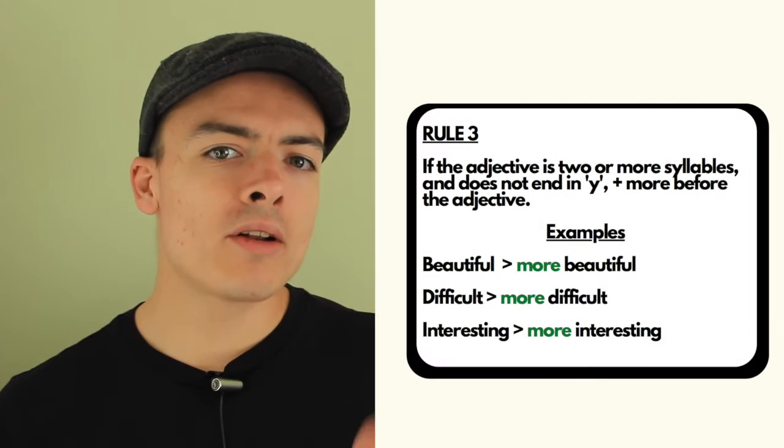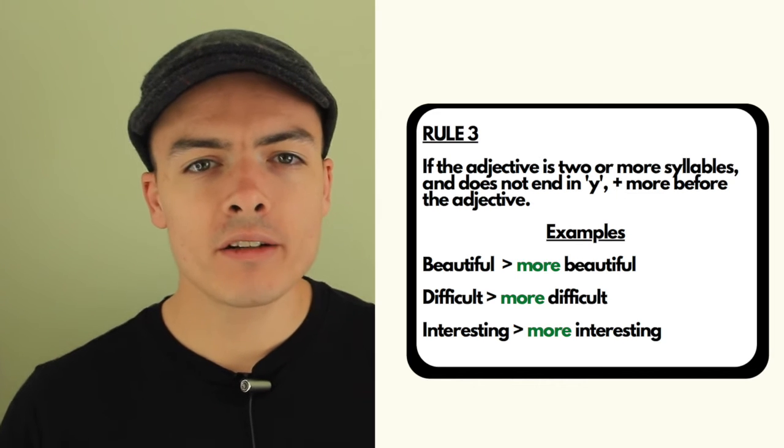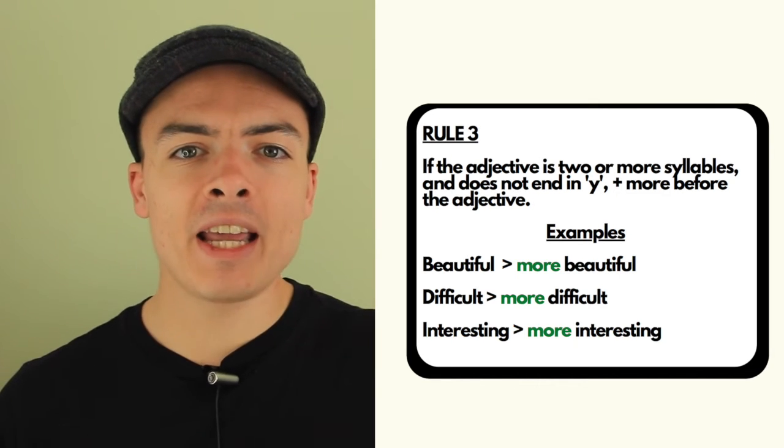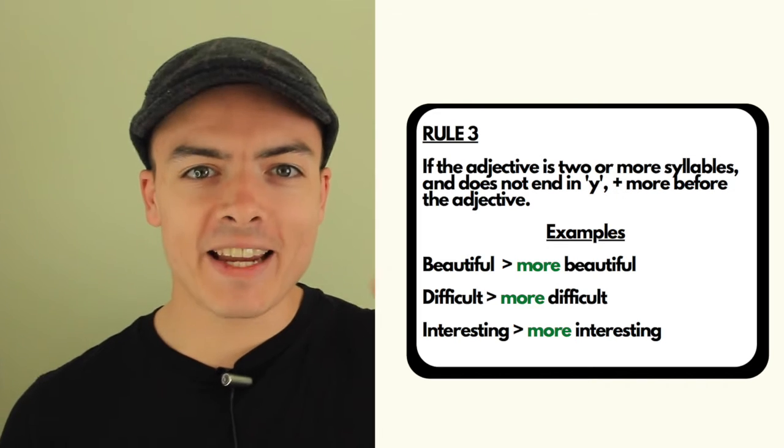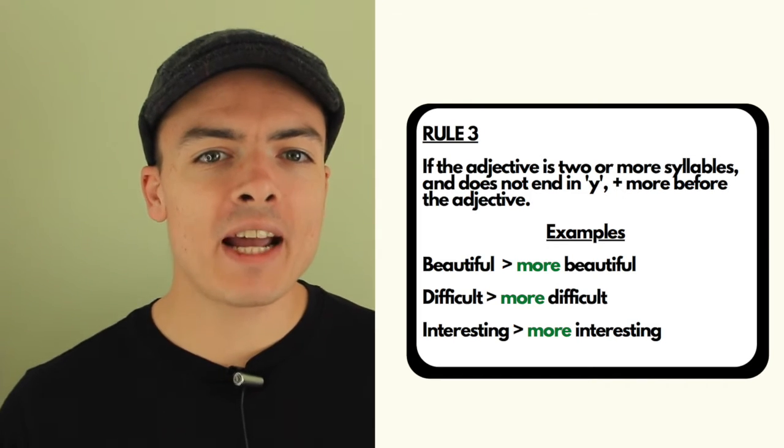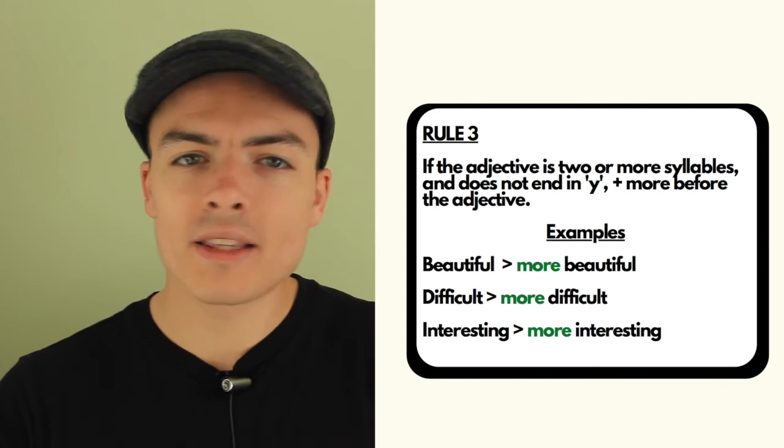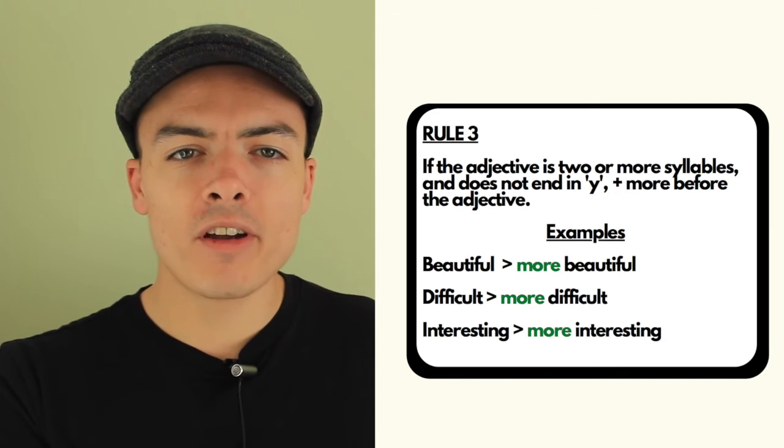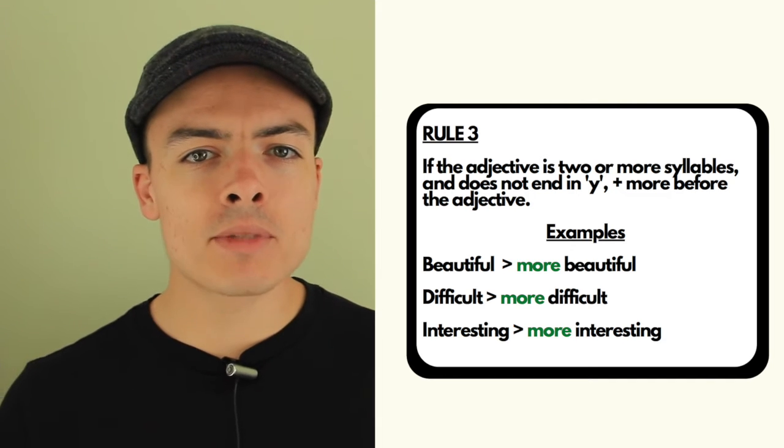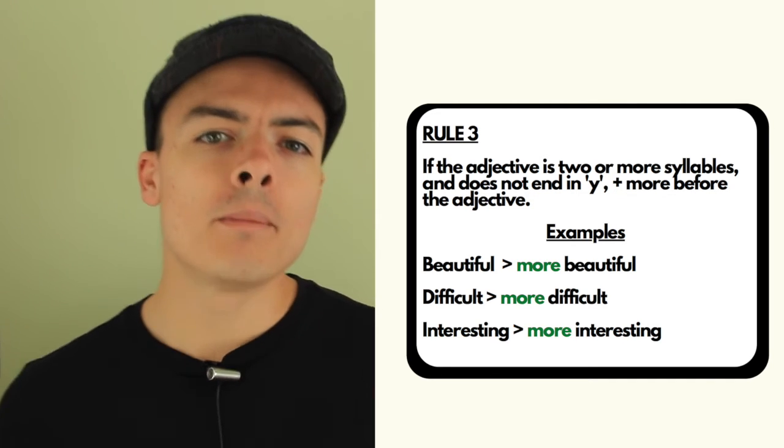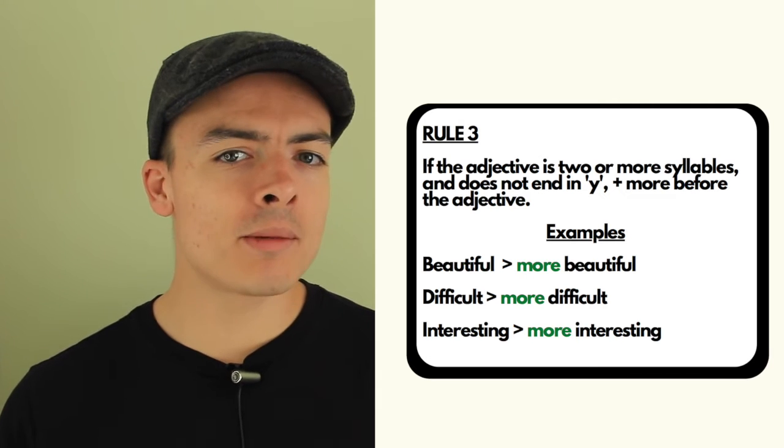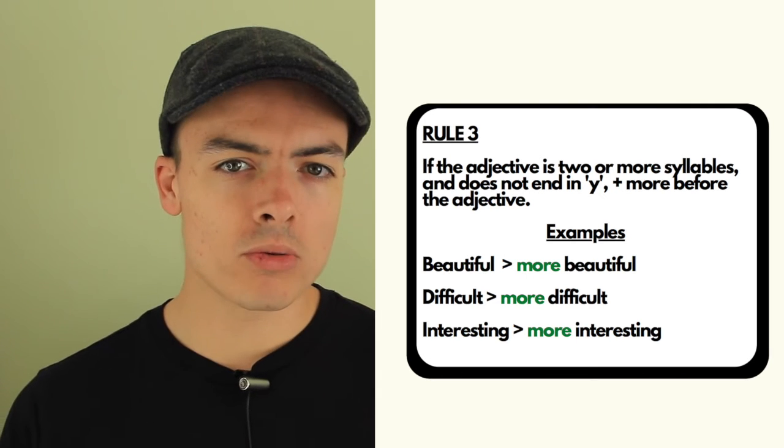If the adjective has more than one syllable and does not end in y, for example beautiful, difficult, interesting—so if it has more than one syllable and does not end in y, we add the word more before the adjective. So interesting becomes more interesting, beautiful becomes more beautiful, difficult becomes more difficult.